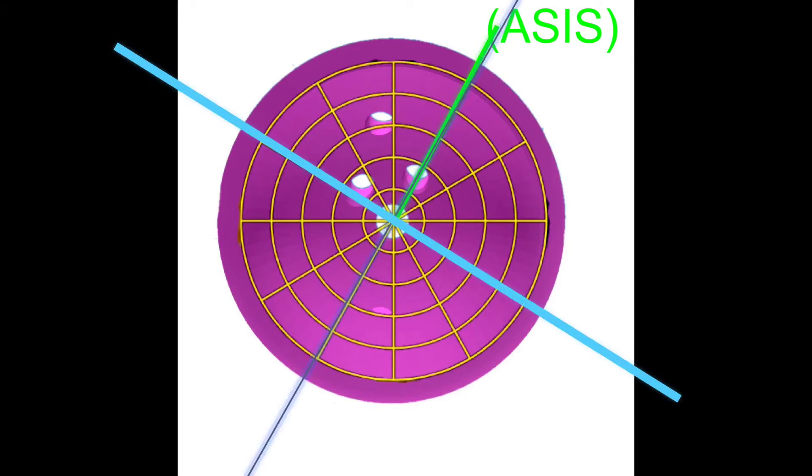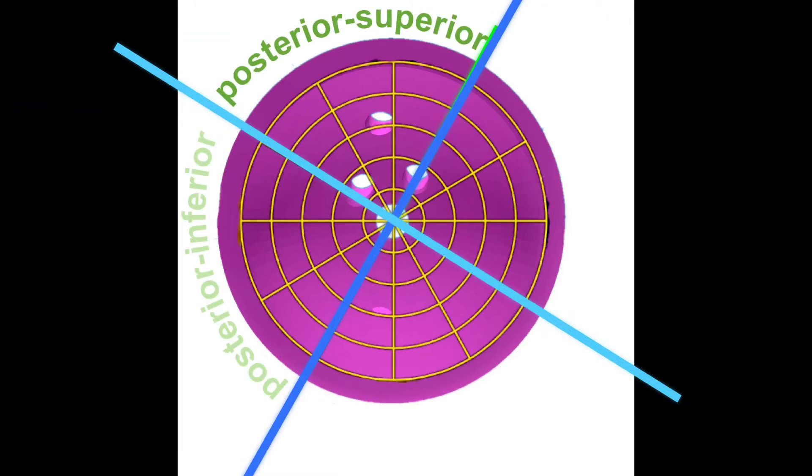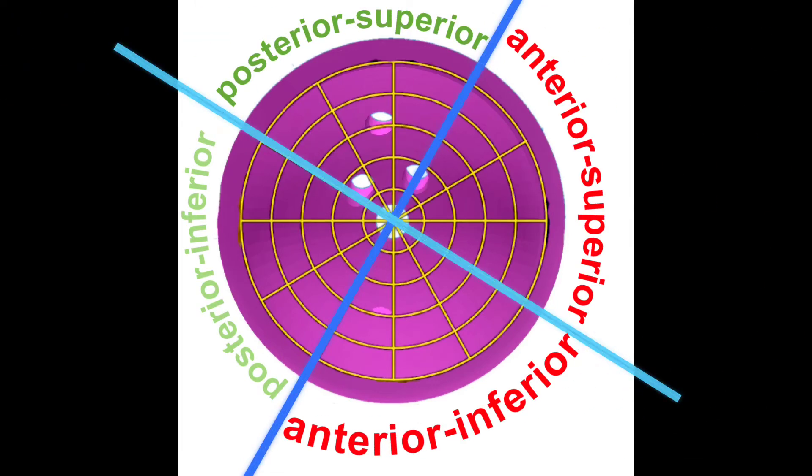Current quadrant zone tracks screw tip position in the acetabular quadrant system: posterior superior, posterior inferior, anterior inferior, and anterior superior quadrants.